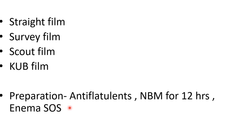Apart from the straight film, we require patient preparation. In an acute emergency there is no requirement — we do a straight film directly. But in chronic conditions, preparation is required. The first is anti-flatulence agents, given for two to three days before the procedure. Anti-flatulence agents remove gas, food, and fecal material from the GI tract. They should be given three days prior and can be in the form of enzyme preparations or charcoal tablets.